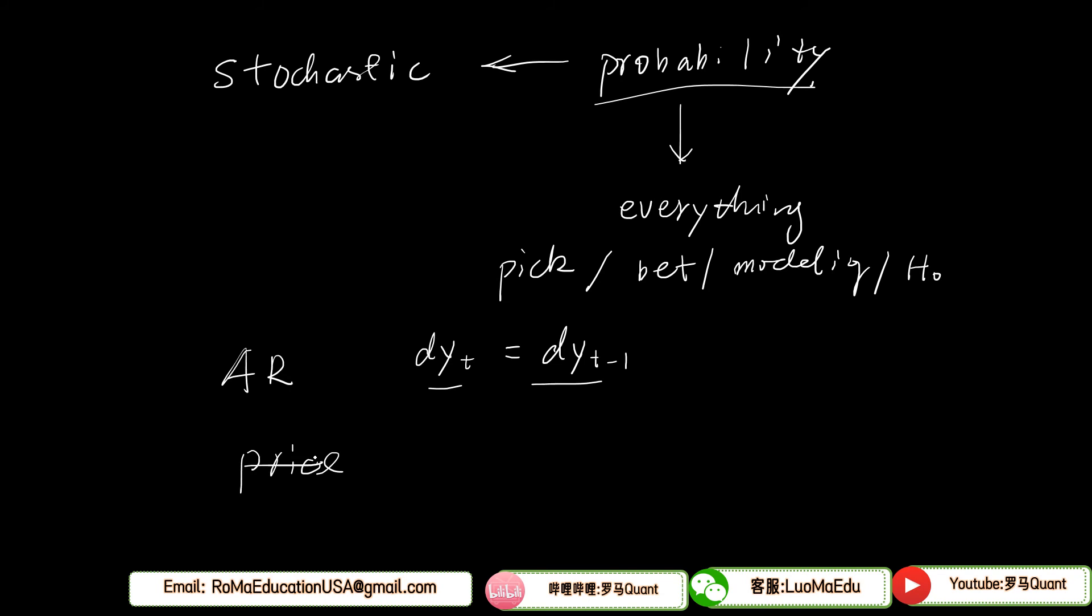The first application of stochastic process or stochastic calculus is pricing. Or let's say more accurately, it's valuation. Fair value is determined by math, but price is not determined by math. It's determined by supply and demand. Or the price change is decided by supply and demand.